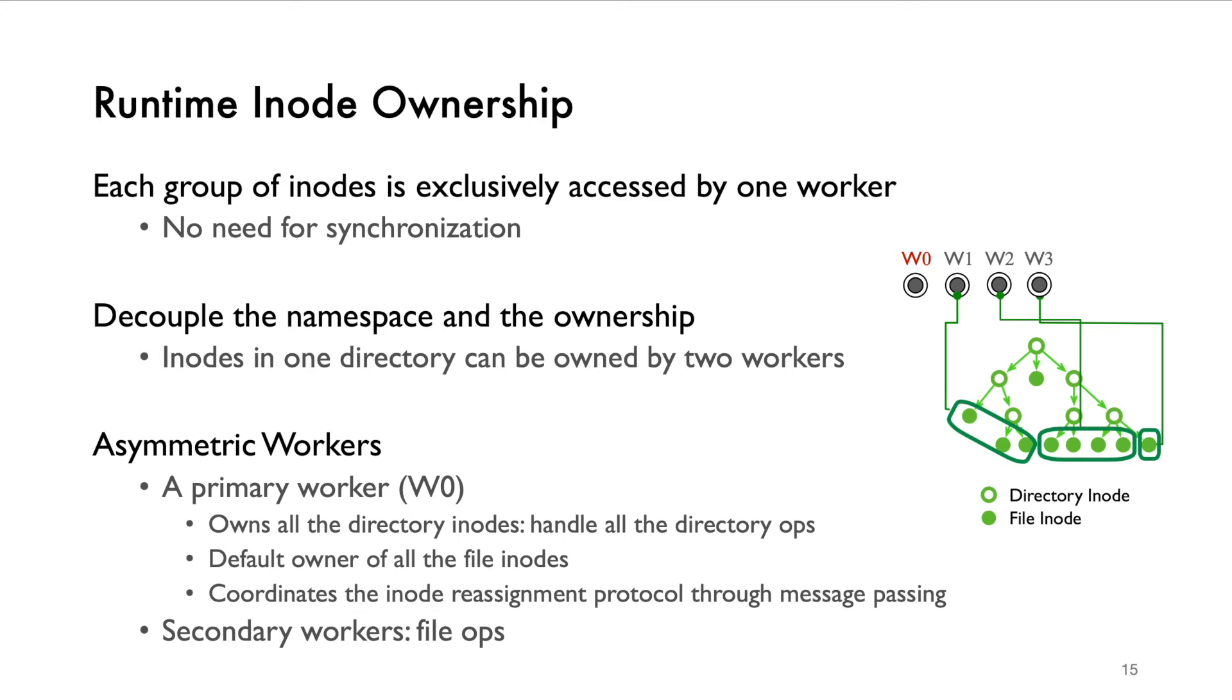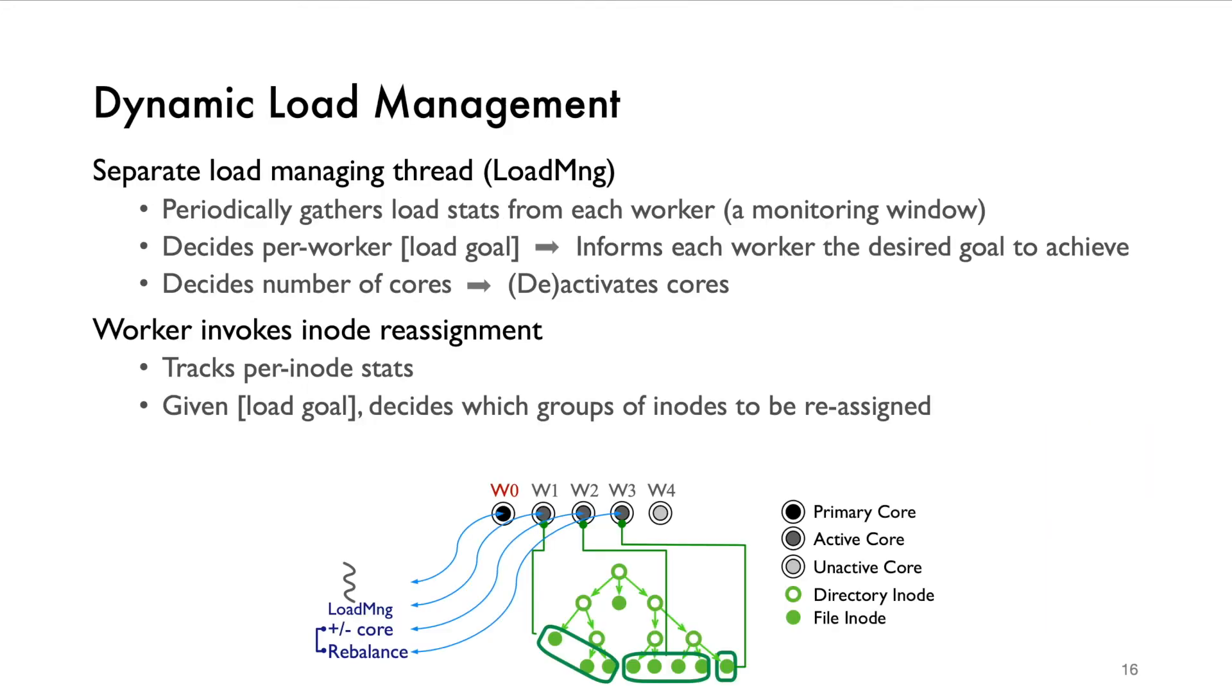Note that currently UFS adopts an asymmetric scheme to partition inodes, where a primary worker, worker 0, is in charge of all the directory inodes and also serves as the default owner of all the file inodes. The primary worker is the central hub to coordinate the inode reassignment protocol. And the rest of the nodes are secondary workers and can handle all the file operations.